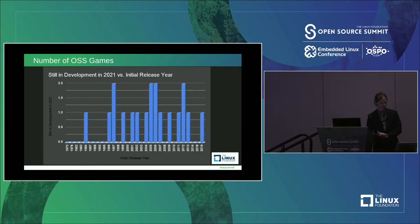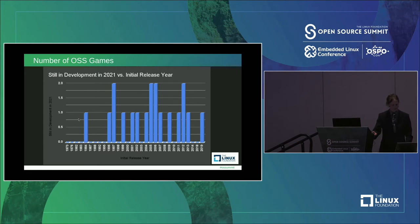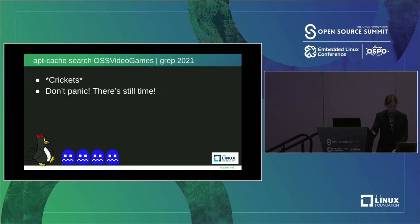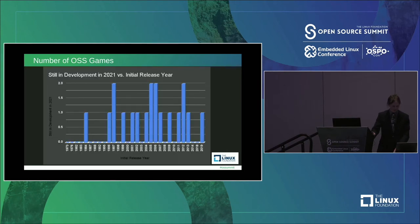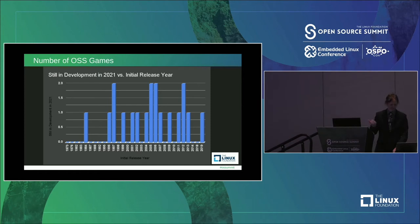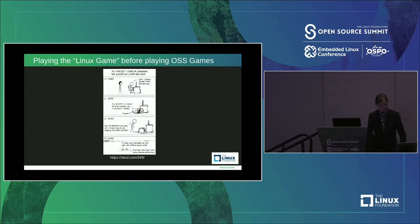Looking at open source games based on their initial release date that are still in development: it's interesting to see this one-off from 1984 still in development in 2021 — that's GNU Chess. You can still download it; it's being maintained. But out of 101 games on this chart, only 19 are still in development in 2021. So if you want to make an open source game, please do. The Linux Foundation is already releasing new tools and a new engine — go get it, use it, contribute to it. We all want to play what you have to make.